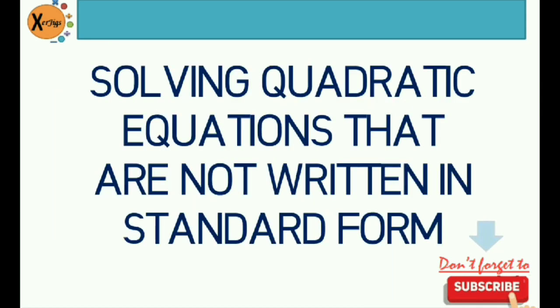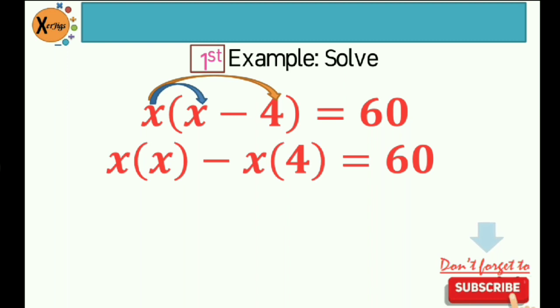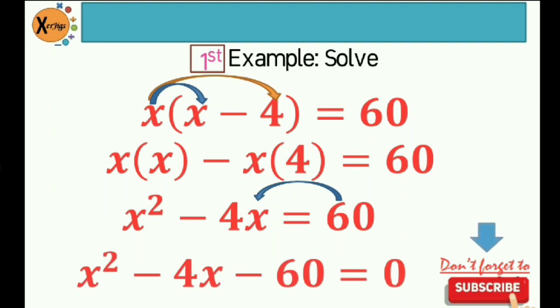So that's the reason why if you are able to write this in standard form, it would be easier for you to solve for the roots of the quadratic equation by using any method that is applicable to the said equation. So on the first part, we'll be solving quadratic equations that are not written in standard form. First example: x quantity x minus 4 is equal to 60. The first thing that we need to do here is to distribute x to the terms inside your parenthesis. So that would be x times x minus x times 4 is equal to 60, giving us x squared minus 4x is equal to 60. Then we need to move 60 to the left side of the equation, giving us x squared minus 4x minus 60 is equal to zero.